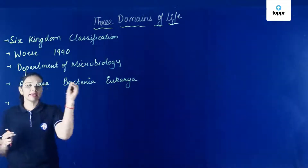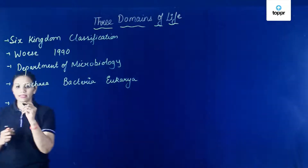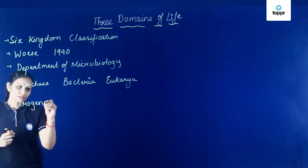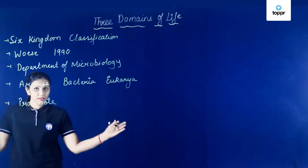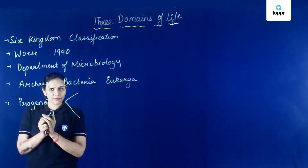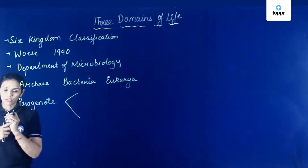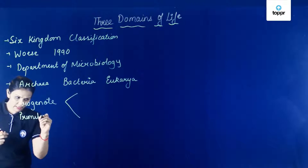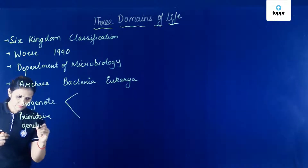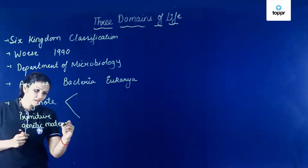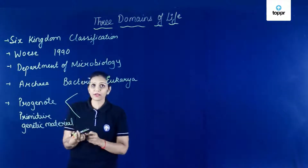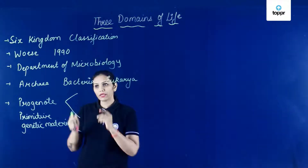Ki jo Bacteria hai aur Archaea Bacteria hai, they are originating from progenote — ek hi ancestor se originate ho raha hai. But separately originate ho raha hai, they are not the same. So progenote jiske paas primitive genetic material hai. Aur ye progenote se Bacteria and Archaea separately originate hue hai, so they cannot be grouped together.